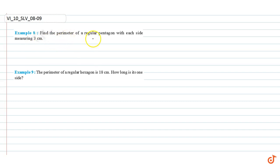We know that a regular pentagon has 5 sides, each measuring 3 cm. So, the perimeter equals 5 times 3, which equals 15 cm. This is our answer.